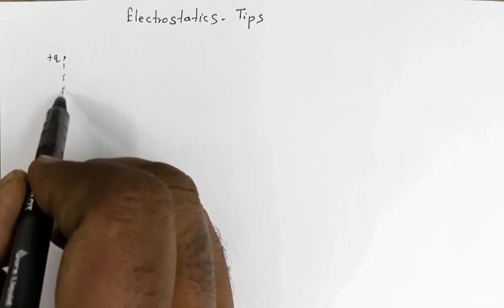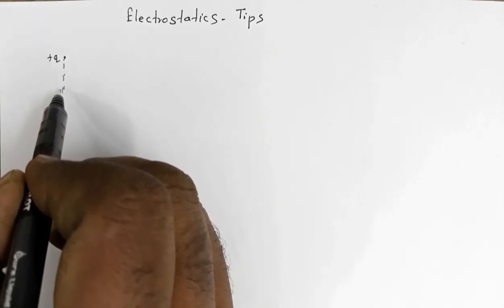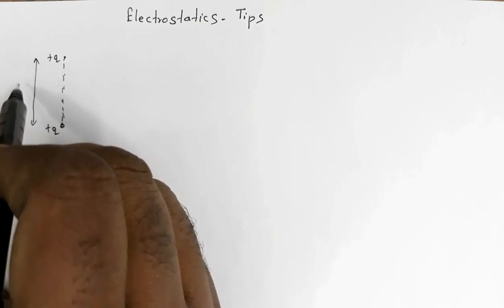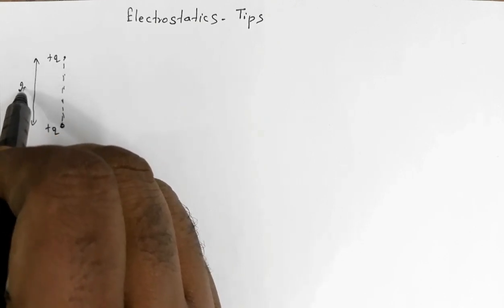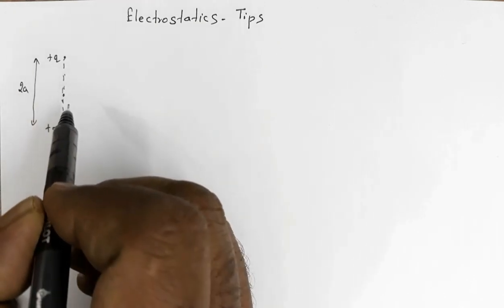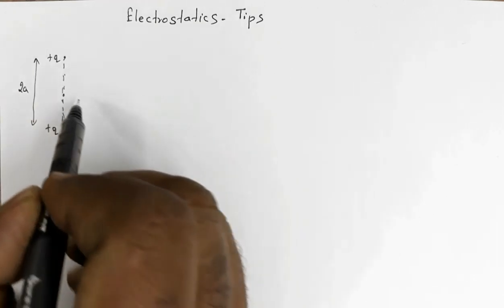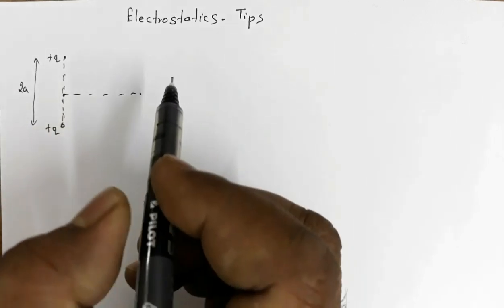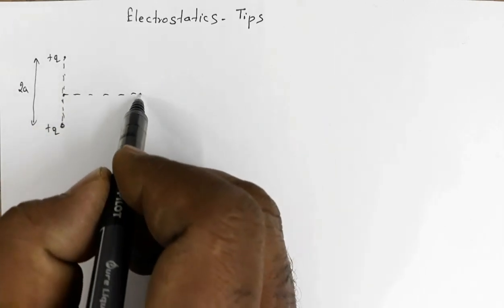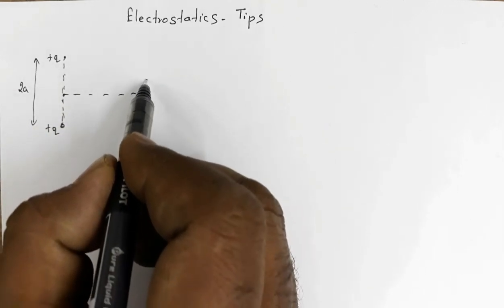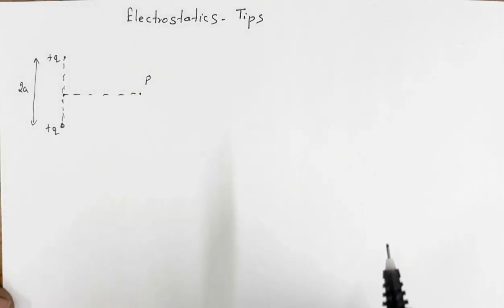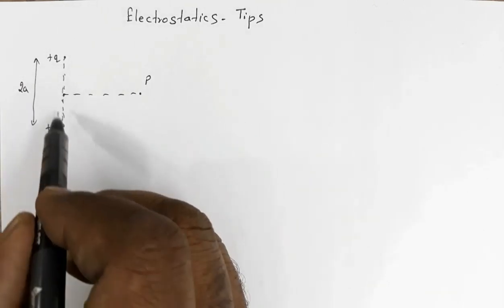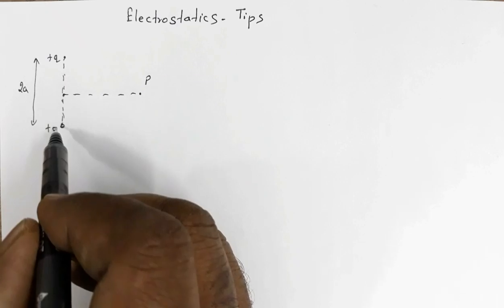This is the midpoint, this is the perpendicular bisector, and this is some point P. Now if these are positive charges of the same magnitude, then the electric field at this point along the perpendicular bisector...